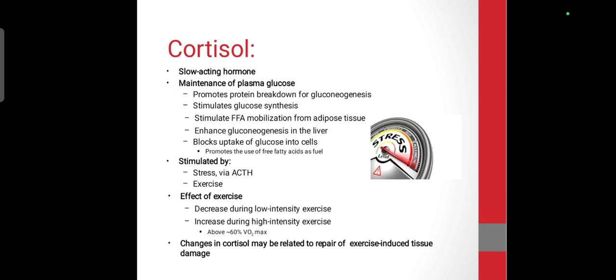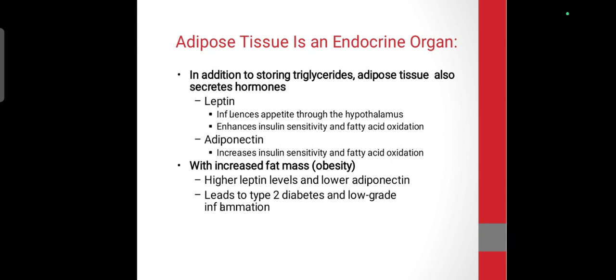Cortisol is a slow-acting hormone that helps maintain plasma glucose through gluconeogenesis, free fatty acid mobilization, and blocking glucose uptake when released. ACTH releases cortisol in response to stress or exercise. At low intensity exercise, cortisol decreases; at high intensity exercise, cortisol increases.